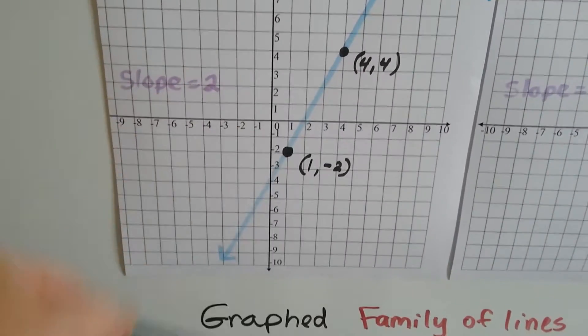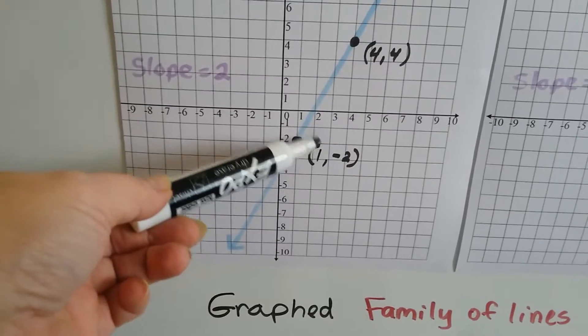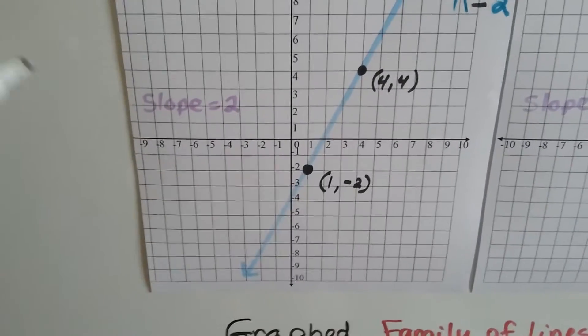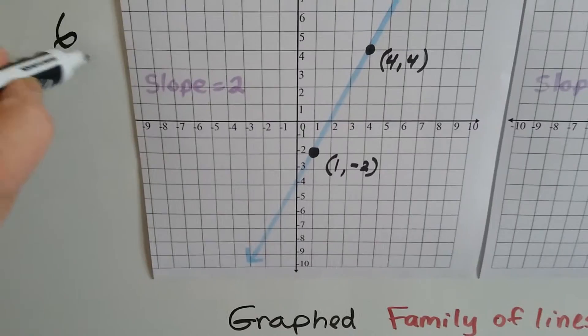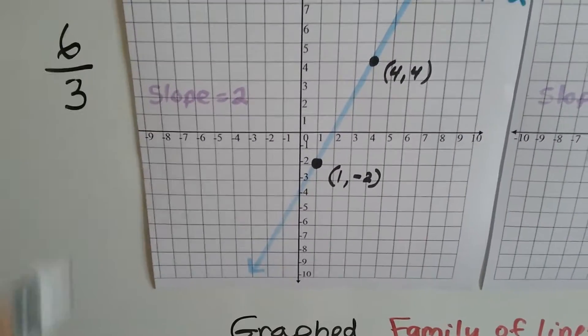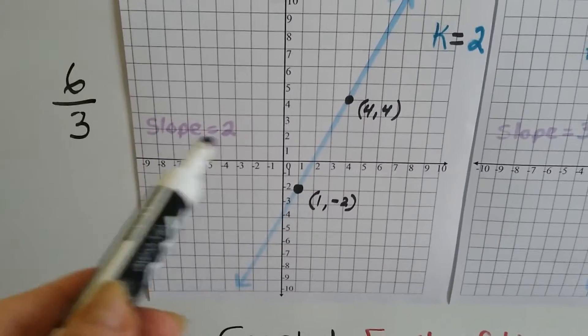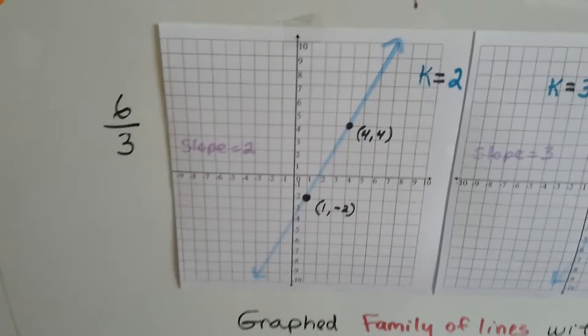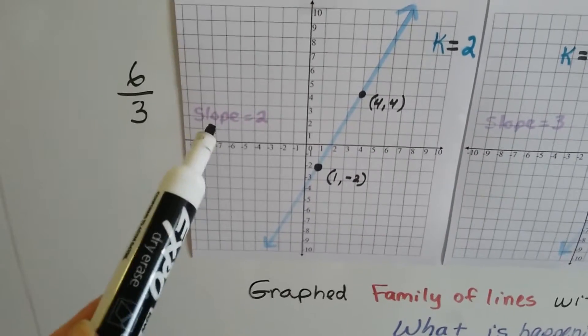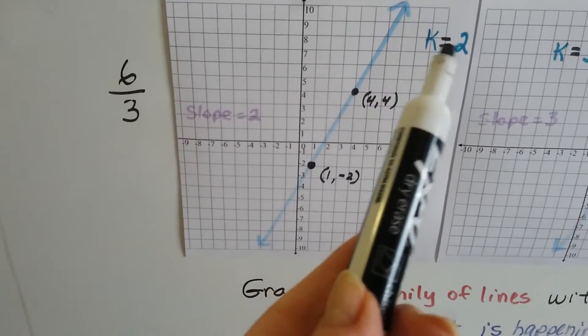And a 6 over a 3 simplifies to 2, doesn't it? That means our slope is 2. Do you remember that from last year? Well, isn't it ironic that the slope is 2 and k is set at 2?